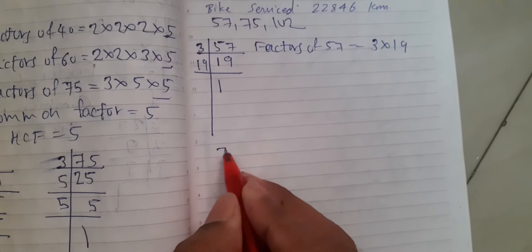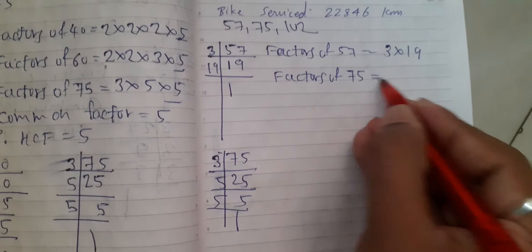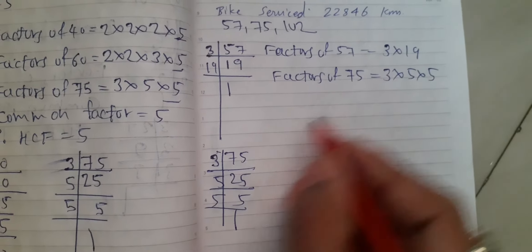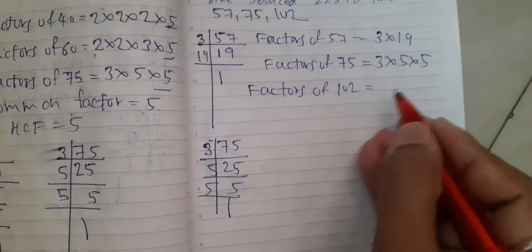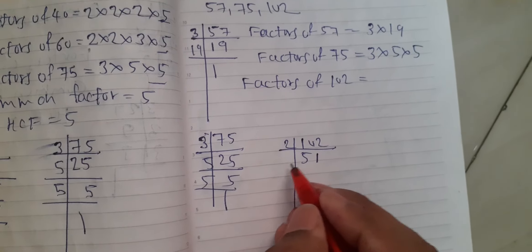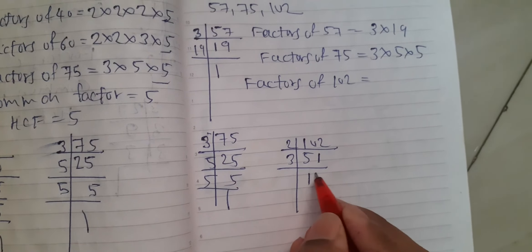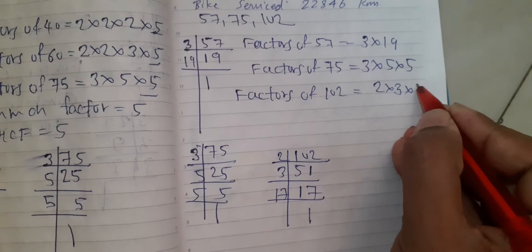Next, 75. 75 is equal to 3 into 5 into 5. Factors of 102: 2 times 51 is 102, 2 times 1 is 2. 3 times 17 is 51. 17 times 1 is 17. So 2 into 3 into 17.